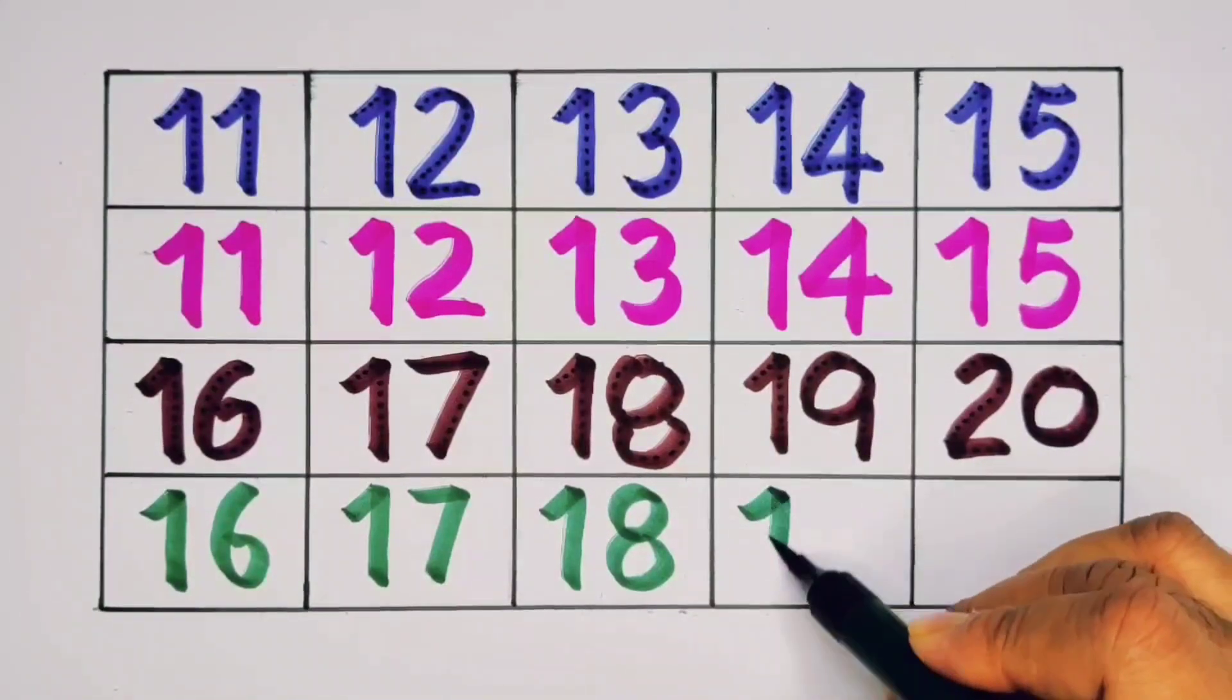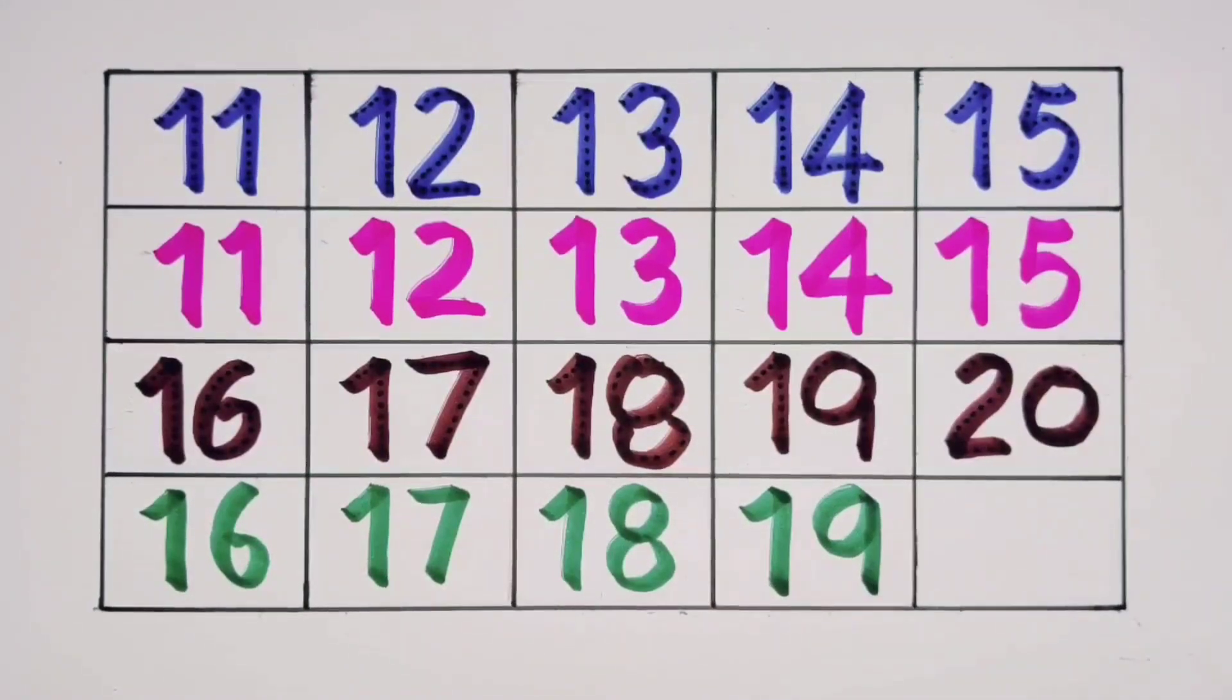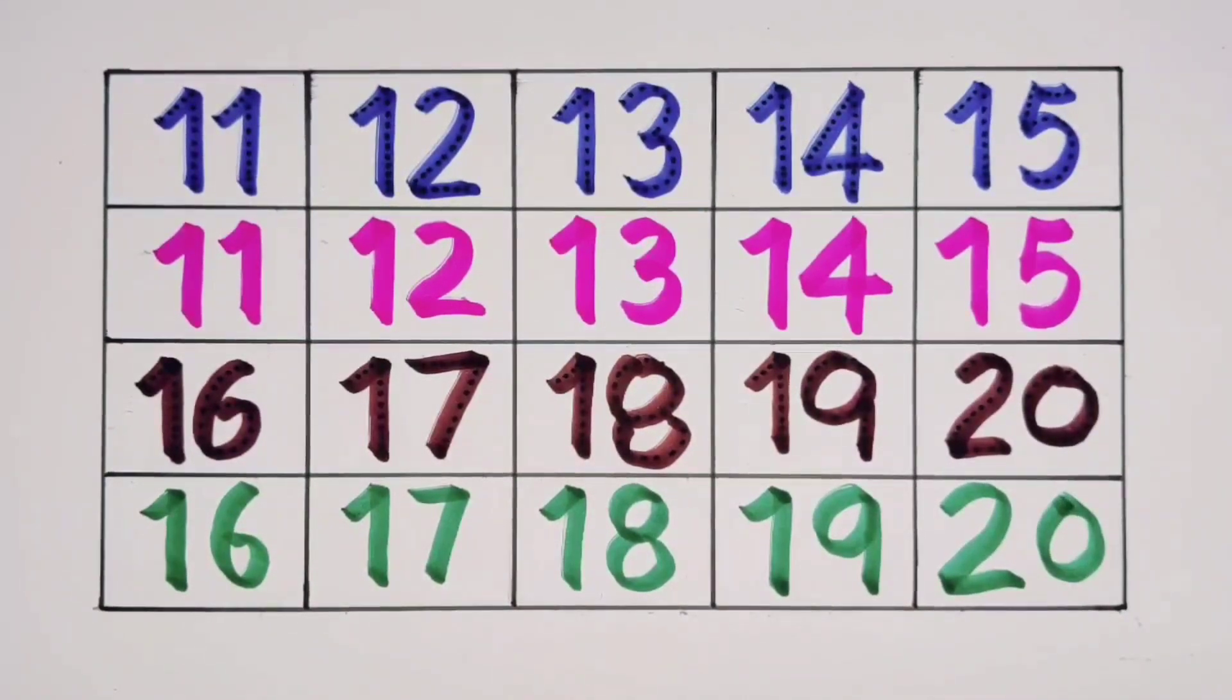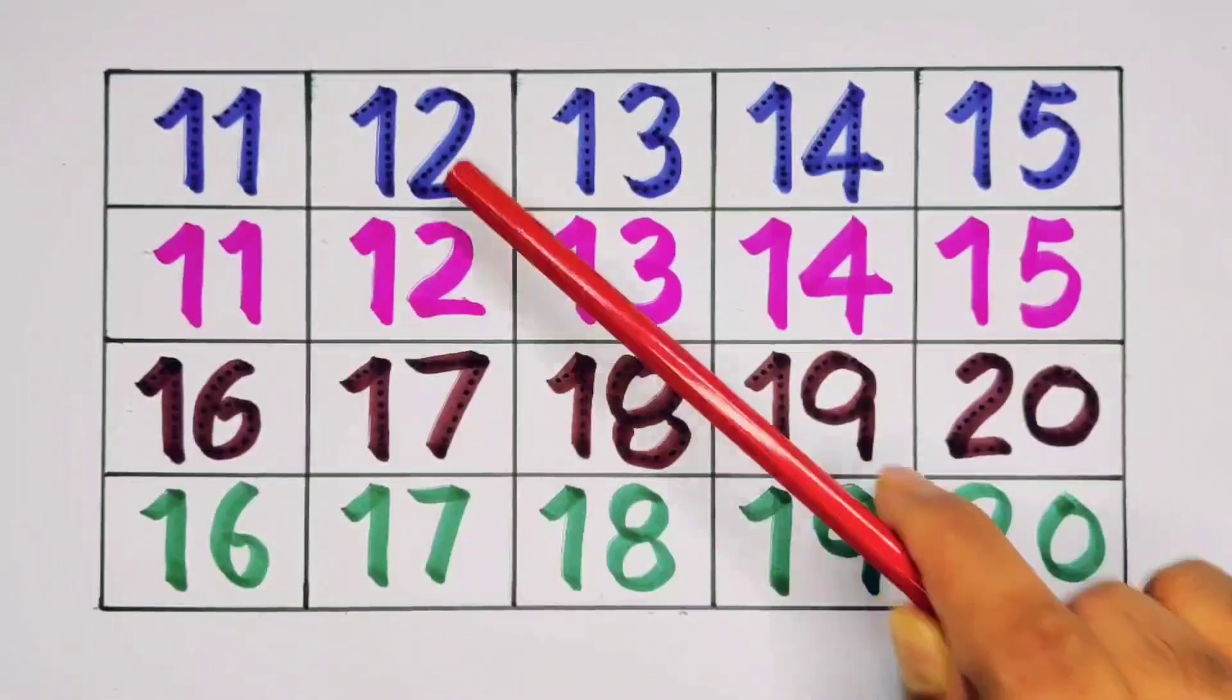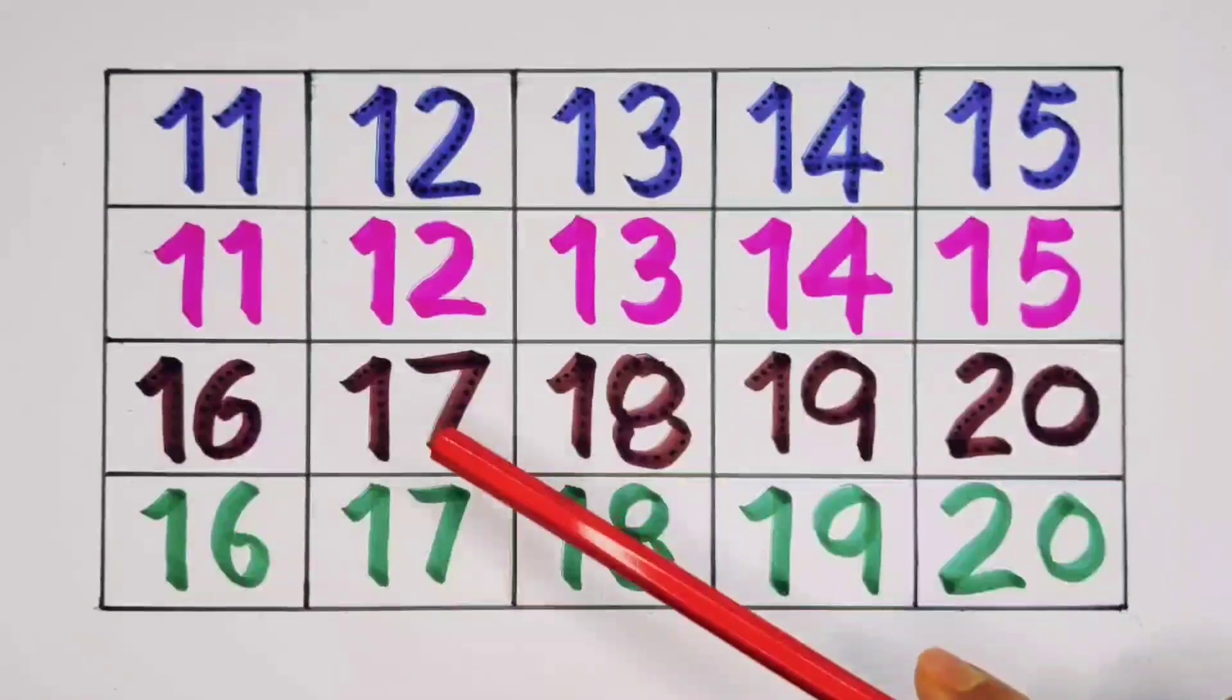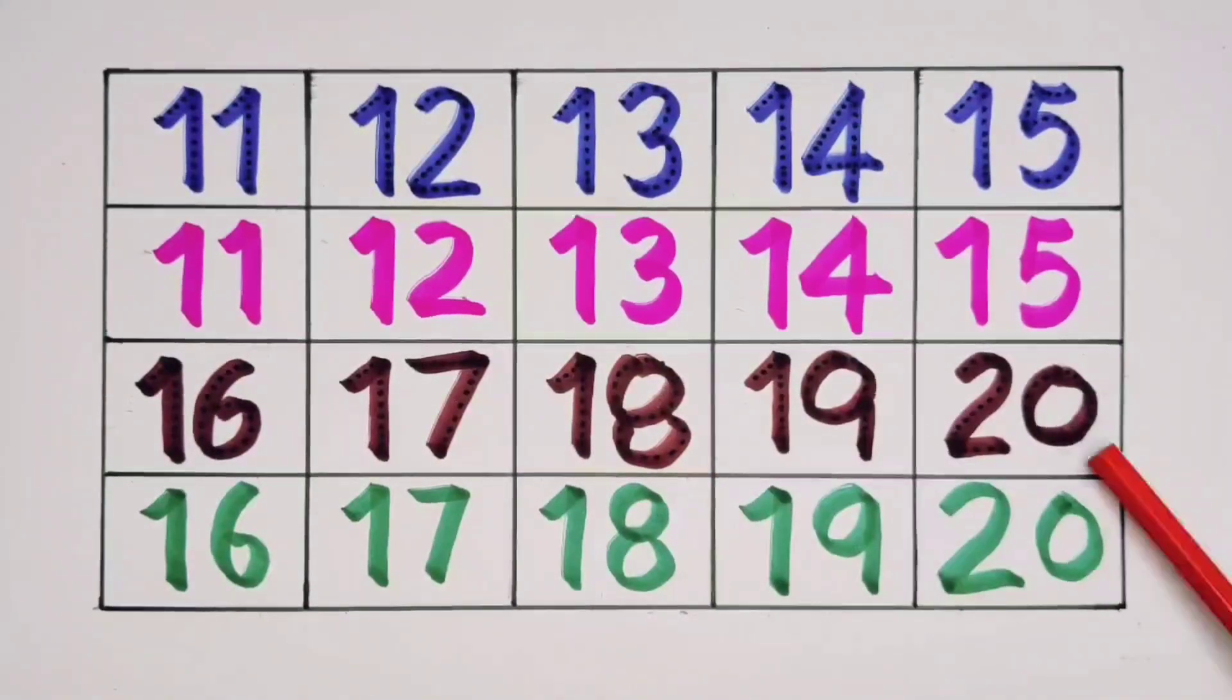What we learned: we learned one one eleven, one two twelve, one three thirteen, one four fourteen, one five fifteen, one six sixteen, one seven seventeen, one eight eighteen, one nine nineteen, two zero twenty.